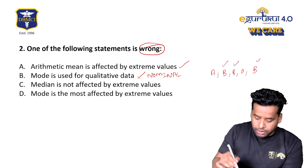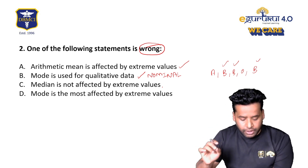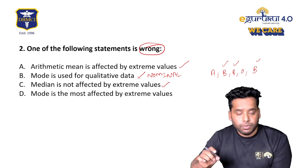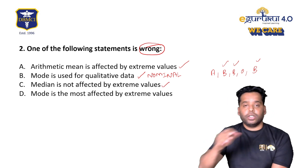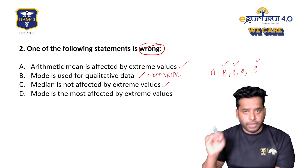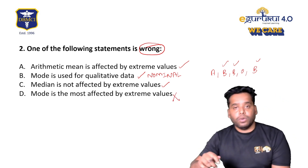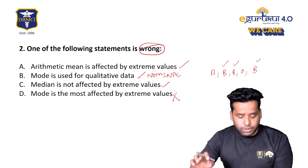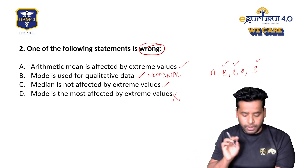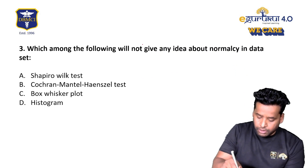Median is not affected by extreme values — correct. The central value has nothing to do with outliers. For skewed data we can use the median. Mode is most affected by extreme values — no, that is wrong. Mode is the least affected. The most affected by outliers is the arithmetic mean.